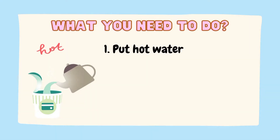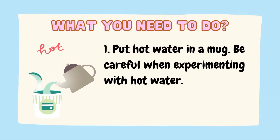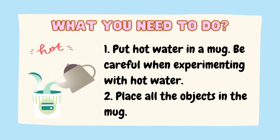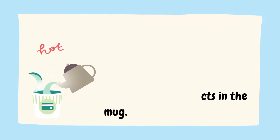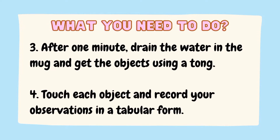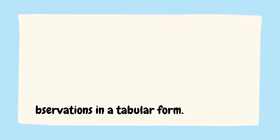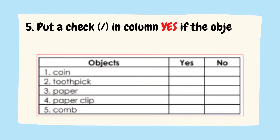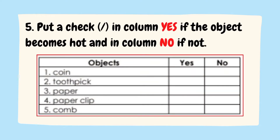What do you need to do? Put hot water in a mug. Be careful when experimenting with hot water. Place all objects in the mug. After one minute, drain the water in the mug and get the objects using a tong. Touch each object and record your observations in a tabular form. Put a check in the column yes if the object became hot, and in column no if not.